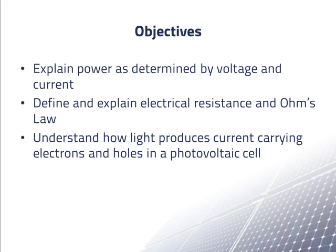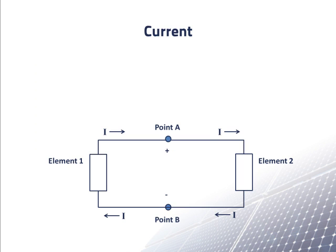First, let's return to a simple circuit we explored in an earlier video. Suppose now that there is a voltage V sub AB between points A and B and a current I is flowing in the conductors as shown.